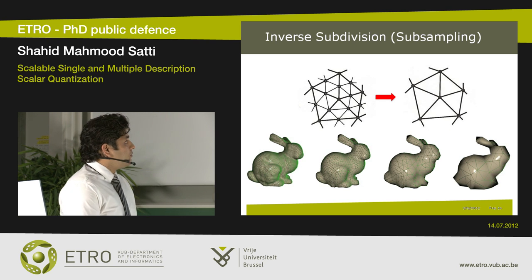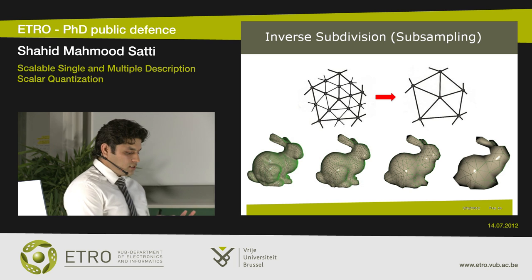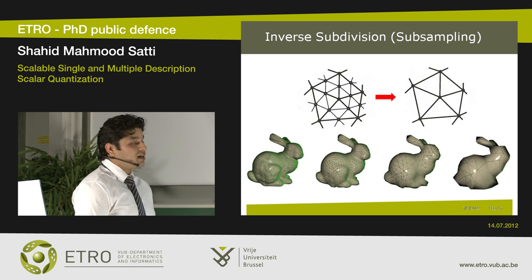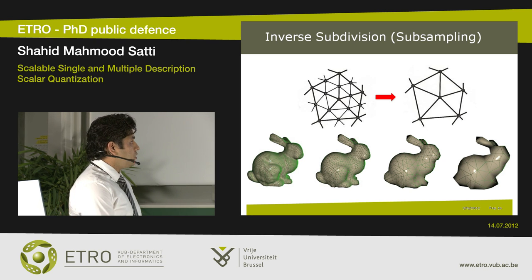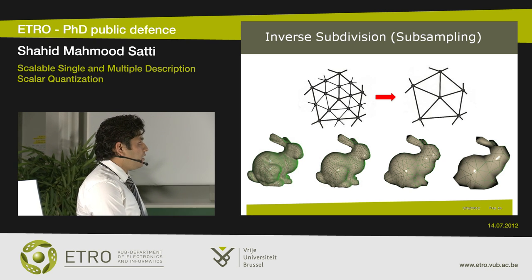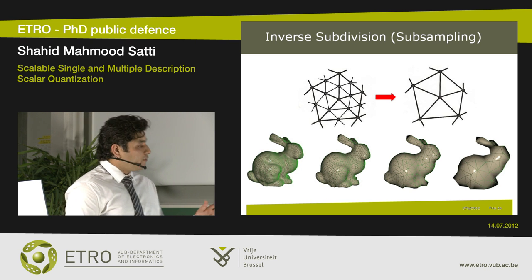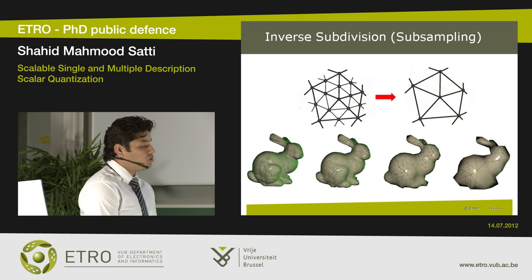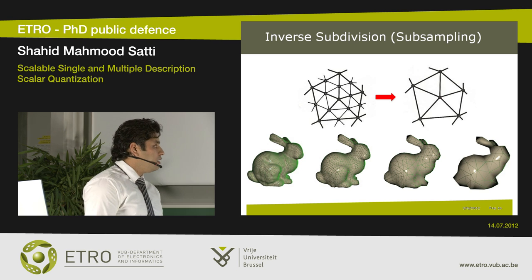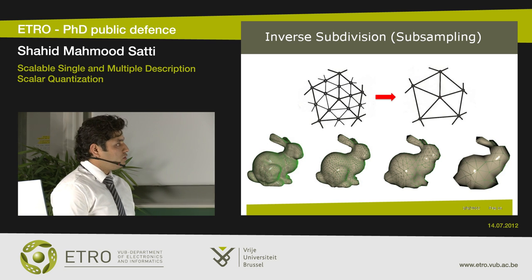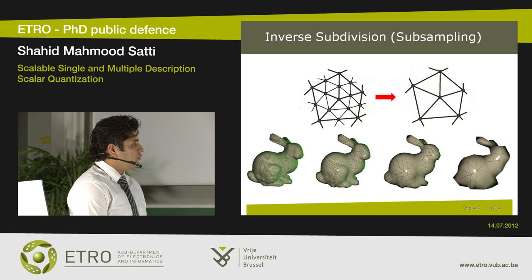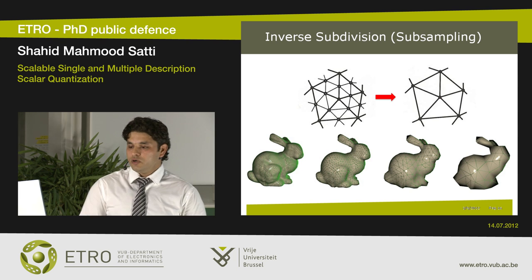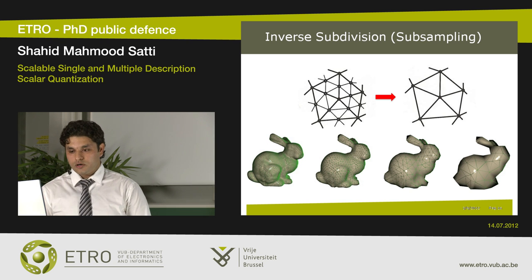Subsampling is the inverse process of subdivision, going from a fine mesh to a coarse mesh. We first identify the vertices we want to throw away — in each main triangle we identify three such vertices — and then physically remove these vertices and their associated edges. As shown on the bunny mesh, we can throw away a lot of information and still keep the geometry, though throwing away too much introduces distortion.